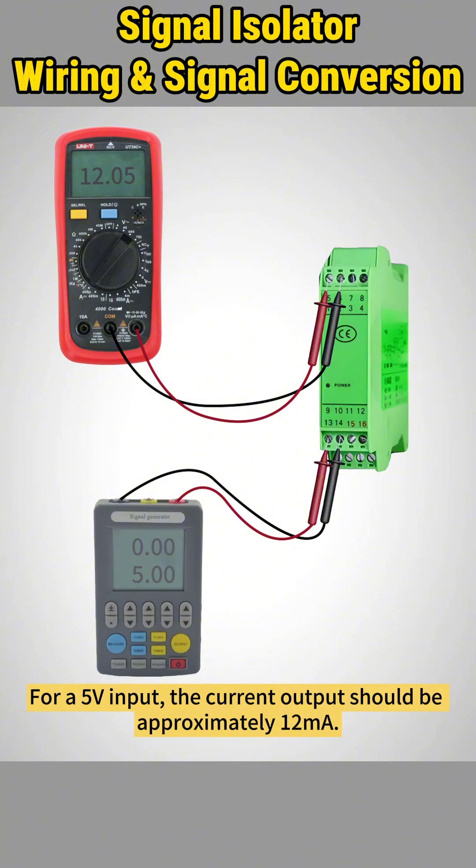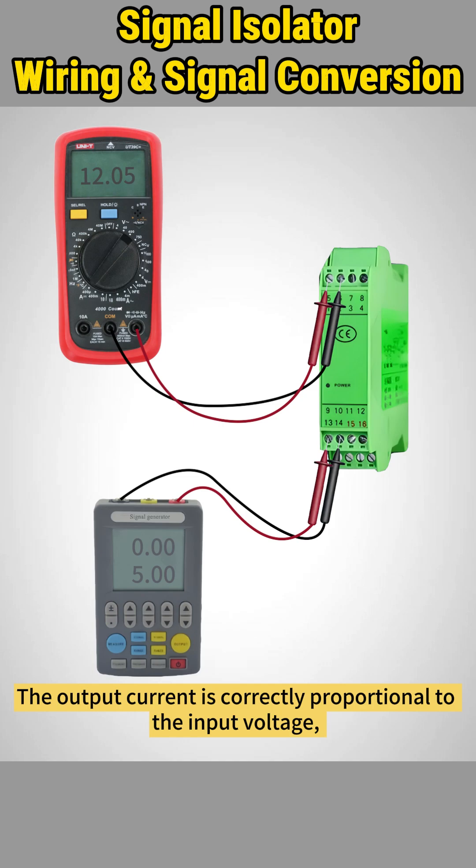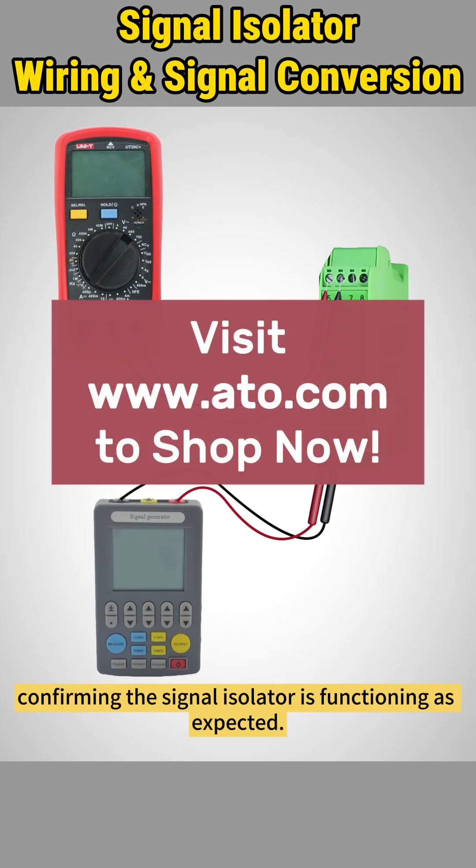For a 5 volt input, the current output should be approximately 12 milliamps. The output current is correctly proportional to the input voltage, confirming the signal isolator is functioning as expected.